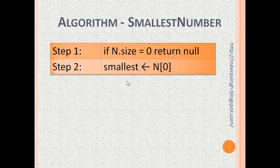Step 2: Get some space to store a variable called smallest. Assign the first number in the list, which is n[0], to smallest. This left arrow means assign.